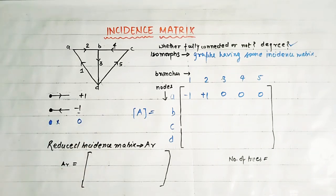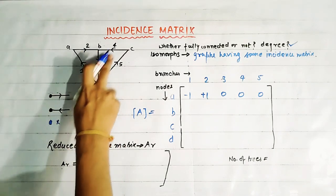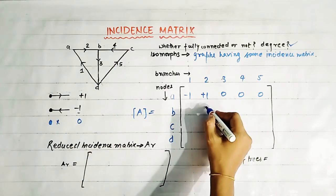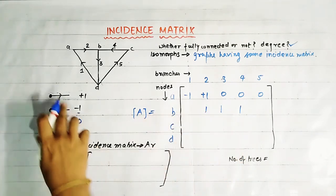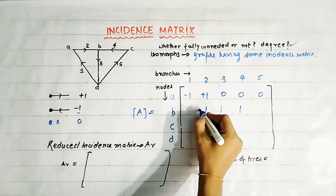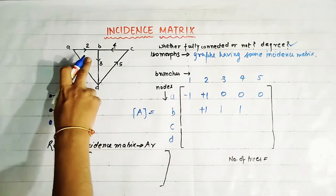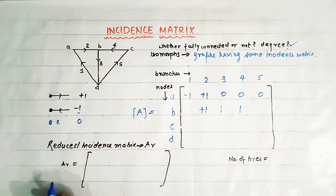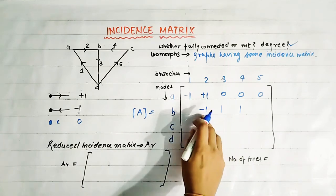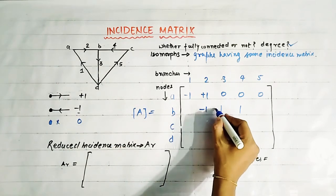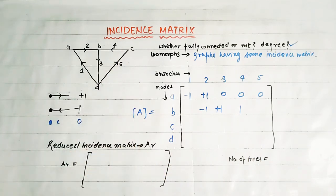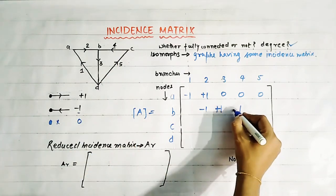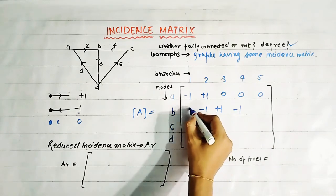At node B, branches two, three, and four are connected. Branch two is entering the node, so we write minus one. Branch three is leaving the node, so we write plus one. Branch four is entering the node, so we write minus one. Remaining branches get zero.